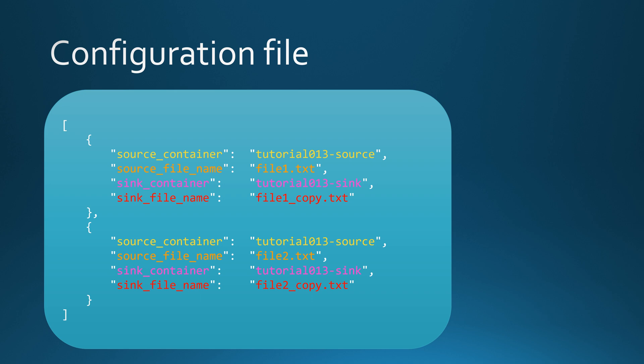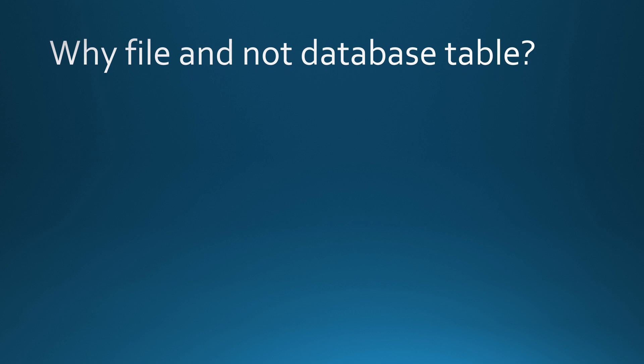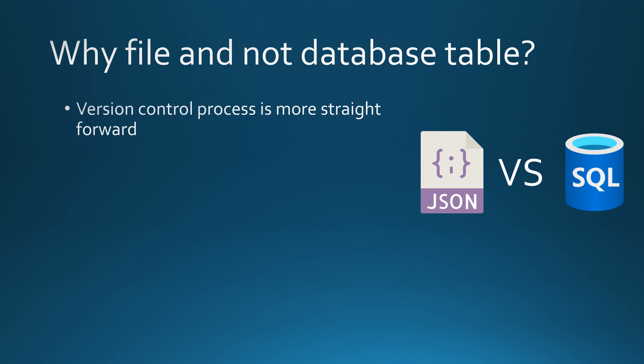In many similar Data Factory tutorials, people use database tables for this configuration. I want to break down quickly why I would say that using files is a better approach. My first point is that version control would be way more straightforward when using files, because files are more easily version controllable than database table data. For files, we can use AzCopy in our CI/CD pipelines to copy them to the correct location in the next environment when deploying the solution. With database tables, deploying that data is a bit harder — it's possible, but more difficult and not so straightforward.